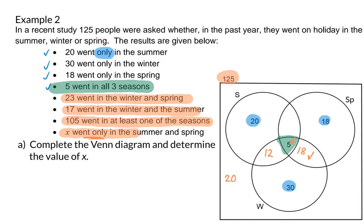And finally, we have that X number of people went only in the summer and spring, so we can immediately fill that in.